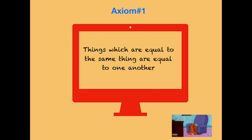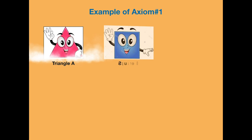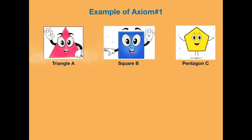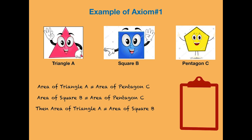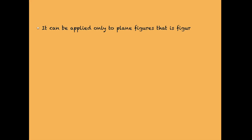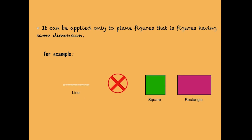The first axiom states: things which are equal to the same thing are equal to one another. From the figure showing triangle A, square B, and pentagon C — if the area of triangle A equals the area of pentagon C, and the area of square B also equals the area of pentagon C, then the area of triangle A equals the area of square B. In short: if A = C and B = C, then A = B. This axiom applies to plane figures of the same dimension; for example, a line cannot be compared with a square or rectangle.